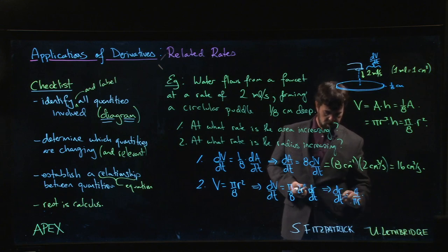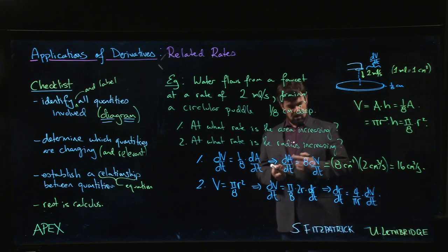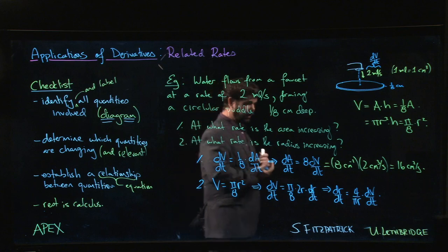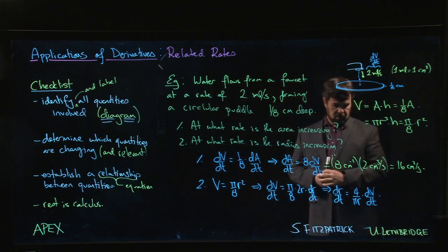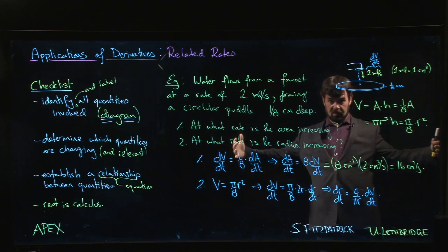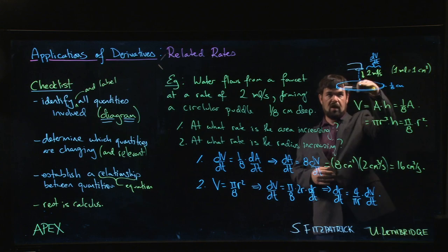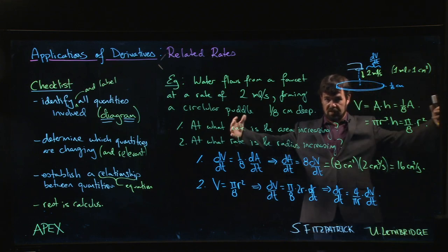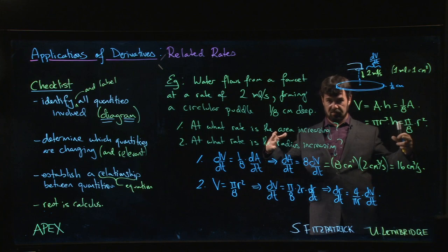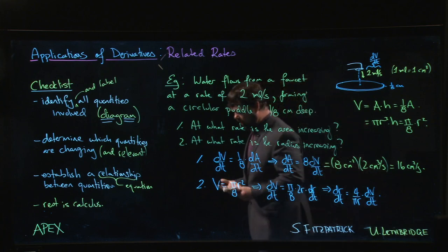We can't solve the problem until we actually know the radius, but we can think about what this is telling us and whether it makes sense. You're adding water at a constant rate and asking how that affects the rate at which the radius is increasing. If you think about it, if you have a small puddle and you start adding water at this rate, that's going to make more of a difference than if you have a really big puddle adding water at the same rate. The small puddle is going to increase in radius faster than a large puddle, so that makes sense.